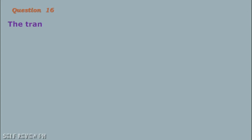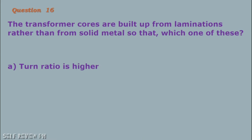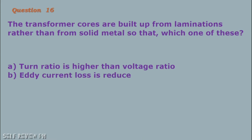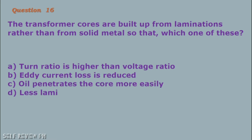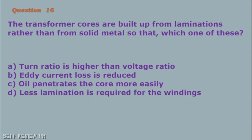Question number 16: The transformer cores are built up from laminations rather than from solid metal so that: A. Turn ratio is higher than voltage ratio B. Eddy current loss is reduced C. Oil penetrates the core more easily D. Less lamination is required for the windings. The correct answer is letter B, eddy current loss is reduced.